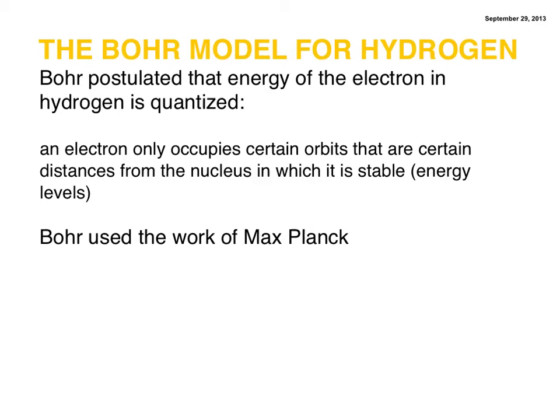Bohr proposed that the energy of the electron in the hydrogen atom is quantized. This was Max Planck's work. But basically, this is where the idea for orbits came from. Electrons could only possess certain amounts of energy that would allow them to be in certain orbits that were set distances from the nucleus. If you have ever heard of energy levels within atoms, this is the same thing.